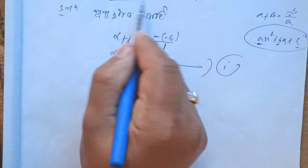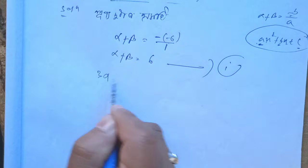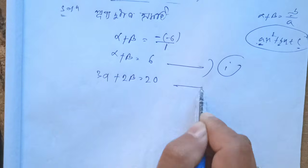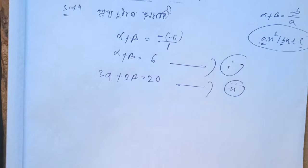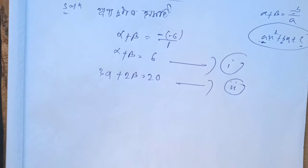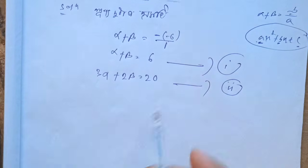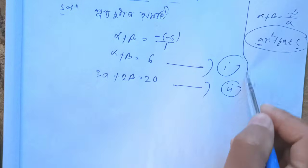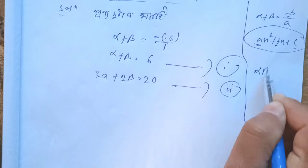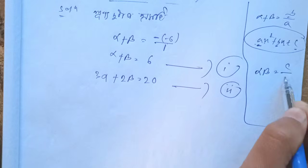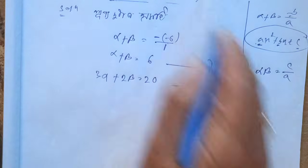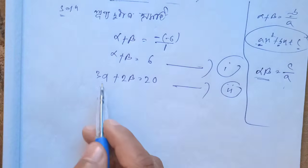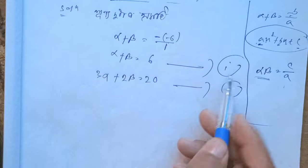We are also given that 3 alpha plus 2 beta equals 20. So we now have two equations: alpha plus beta equals 6, and 3 alpha plus 2 beta equals 20. We will solve these simultaneously to find alpha and beta.